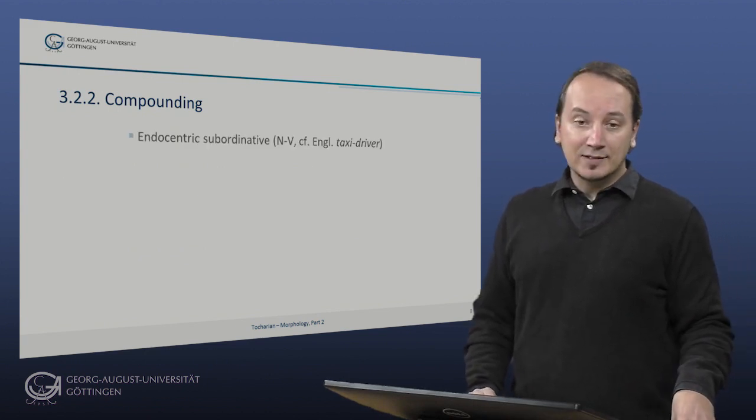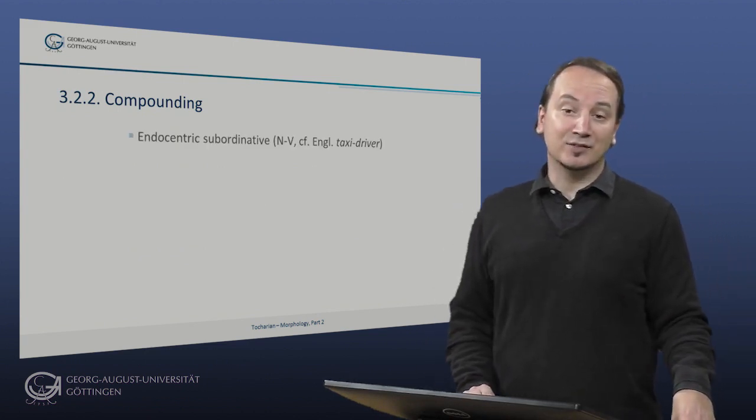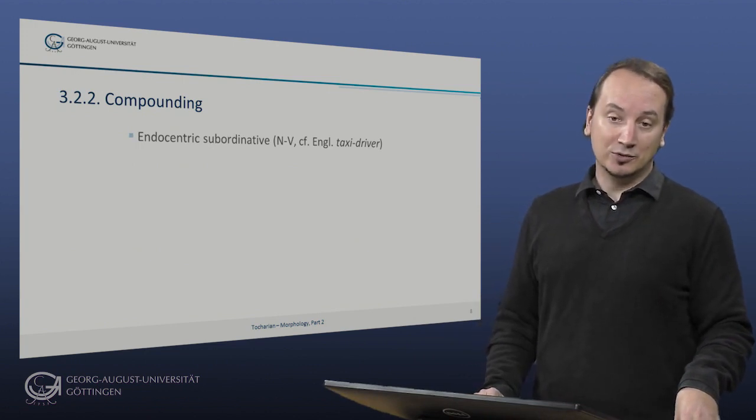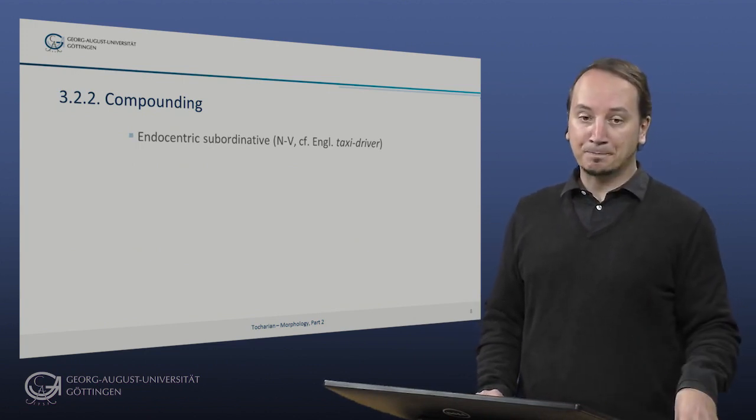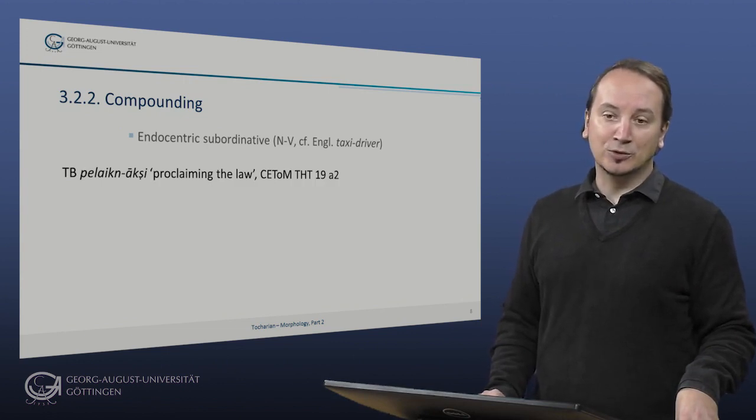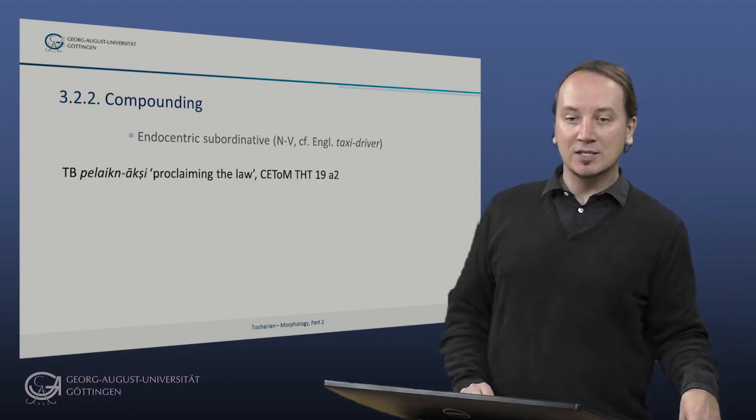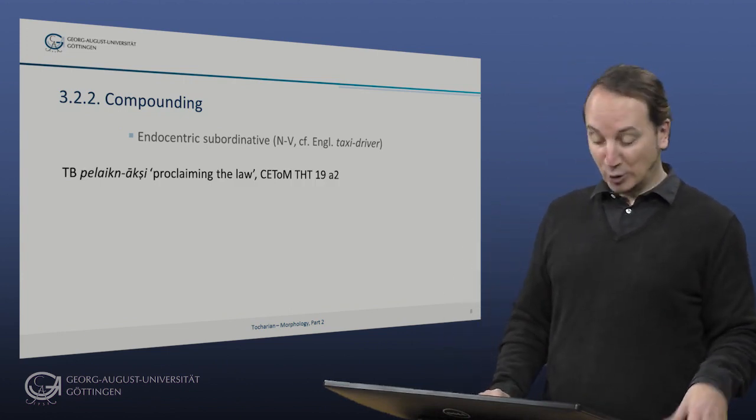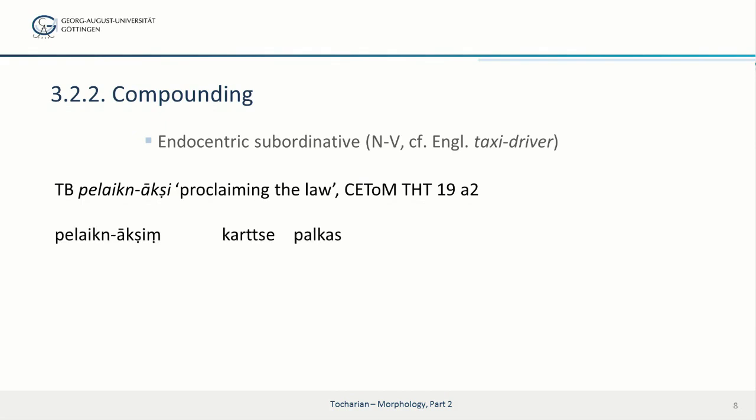The next example is the other kind of endocentric subordinative compound found in Tocharian. This little commandment here is from the Udhanalankara again, and we have Pelaiknakshi proclaiming the law, the Dharma. So Pelaiknakshim Karze Palkas, so look good at the one who proclaims the law, who proclaims the Dharma, so the Buddha.